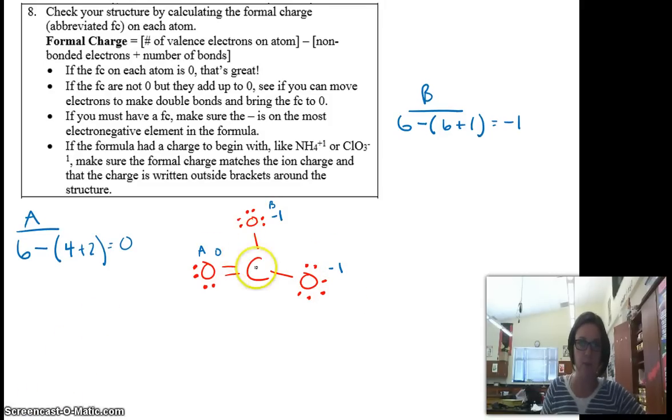And then now let's do for the carbon. Carbons have 4 valence electrons. It has no non-bonded electrons. And it's making 1, 2, 3, 4 bonds. So 4 minus 4 is 0. The formal charge on the carbon is 0.